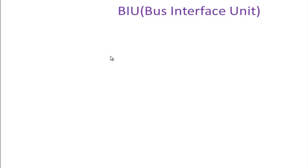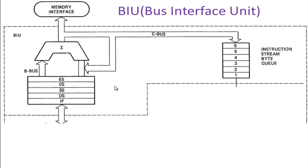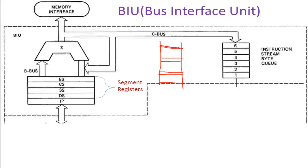First we will see the BIU in detail. BIU is Bus Interface Unit — that is the full form — but it performs very necessary operations like interfacing with other devices. It does all the working related to the memory, that is fetching data from memory and storing data into the memory. All external works are done by this BIU. The first component we will see is the segment registers. If you remember, the memory segmentation diagram had segments with a starting address, also called the base address, and this address was held by base registers or segment registers.